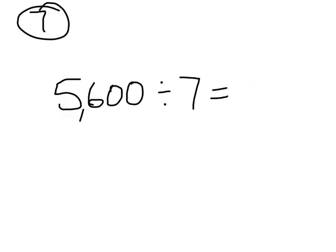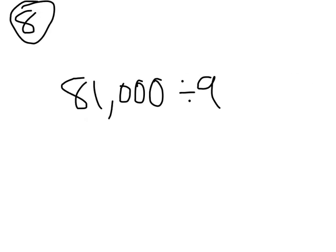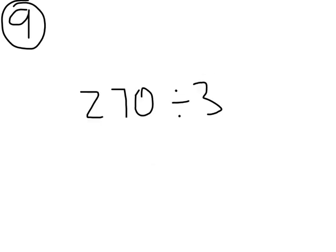Now you try three problems. What's 5,600 divided by 7? It's 800 — 5,600 split into 7 groups would make 800. What's 81,000 divided by 9? If I split 81 thousands into 9 groups, that's 9,000 — there would be 9 thousands, written in standard form as 9,000. 270 divided by 3 — if I split 27 tens into 3 groups, what would I get? The answer is 90. There would be 9 tens in each group, which makes 90.